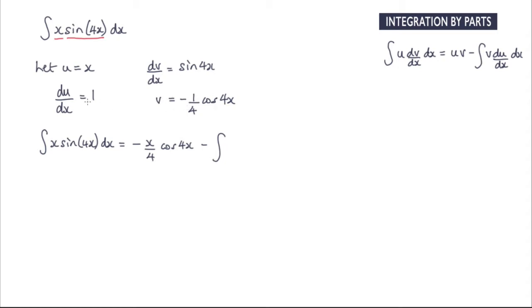So v times du by dx, well we should end up with this here. Now this negative we can simplify with this negative which will become positive. The quarter I can bring outside the integral and therefore we have cos 4x with respect to x.